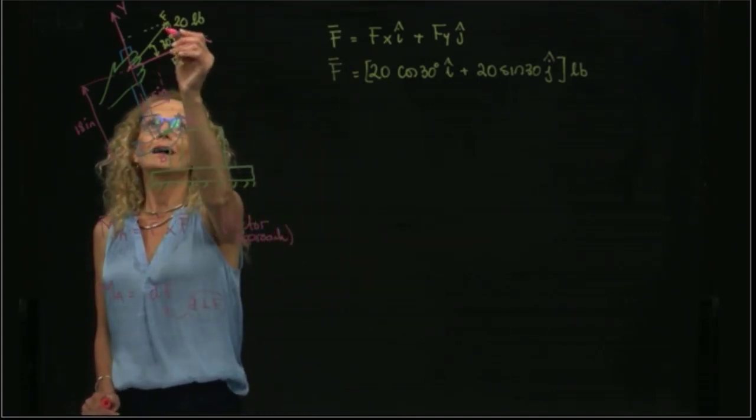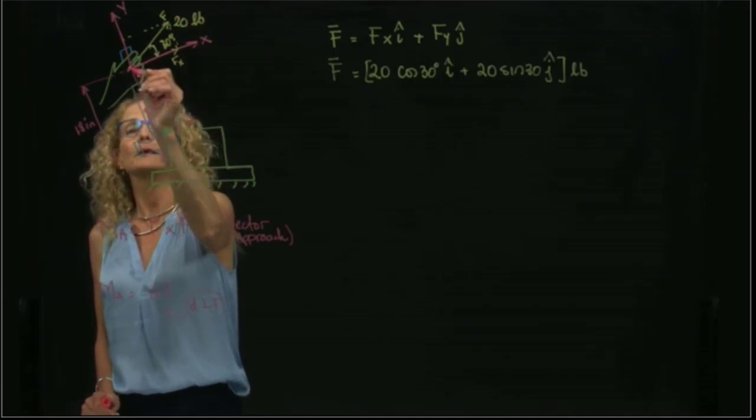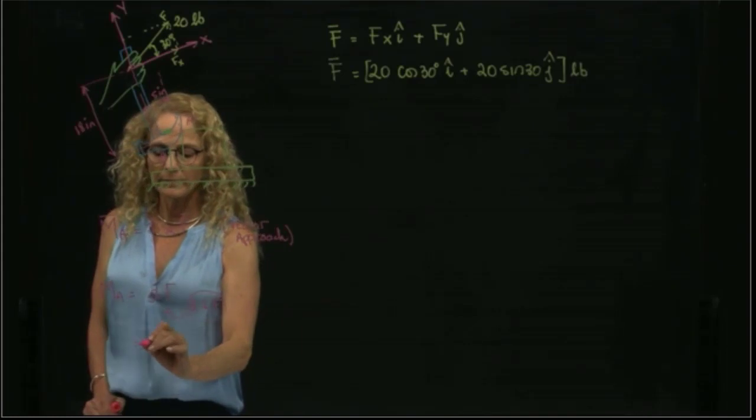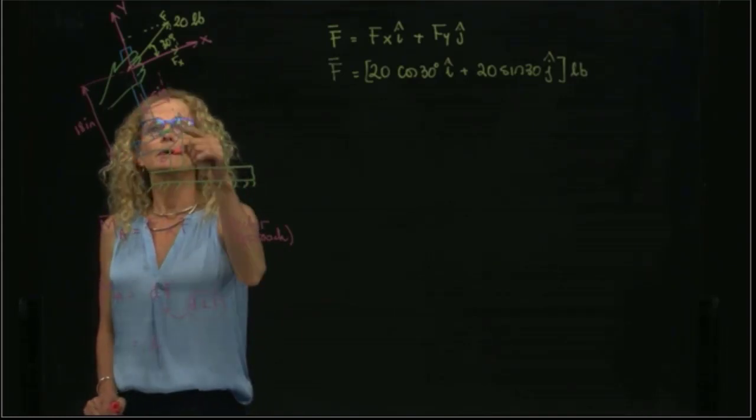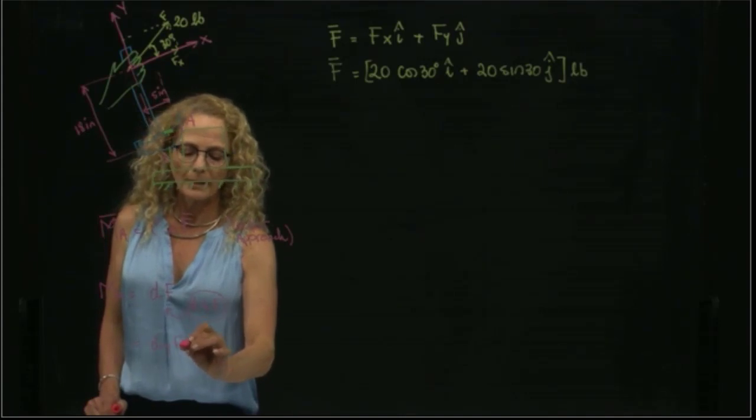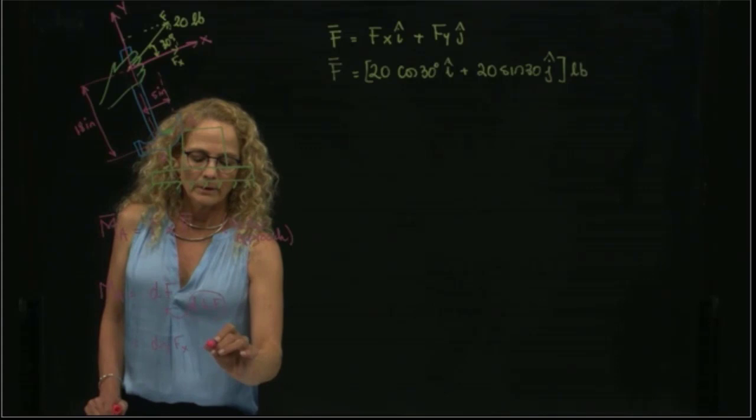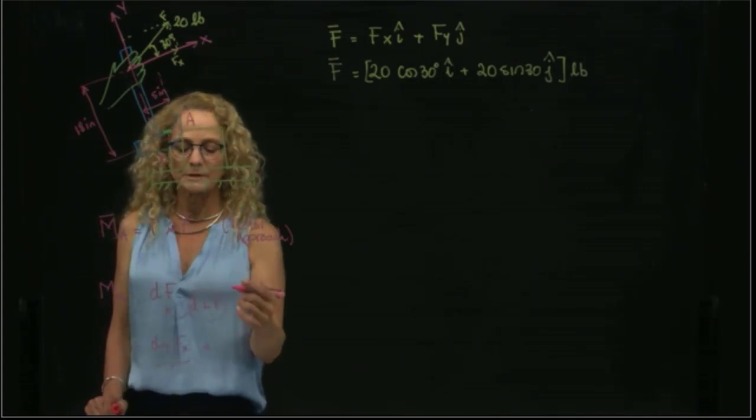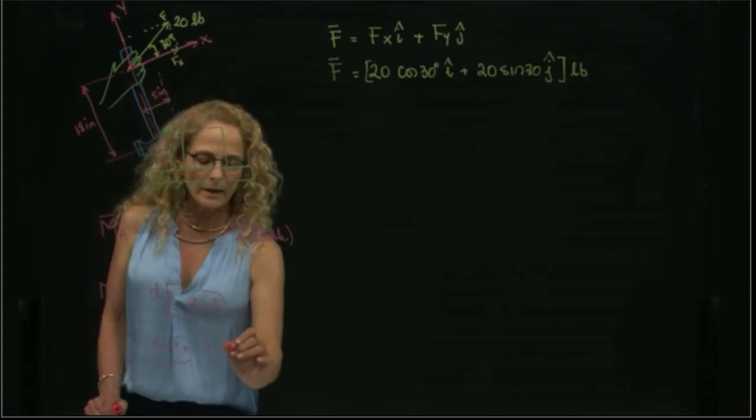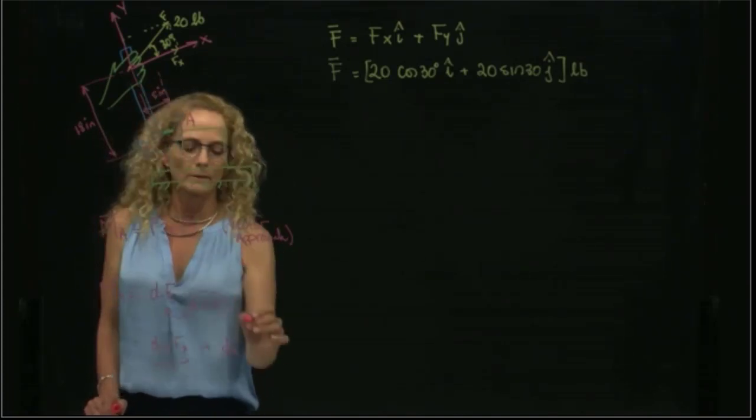So either I have to slide this forward until I find the perpendicular distance, or I can find the perpendicular distance in y direction and multiply by the x component, right? Obviously, this will have a specific sign, and then I will have the y, the x direction, multiplied by the y component.